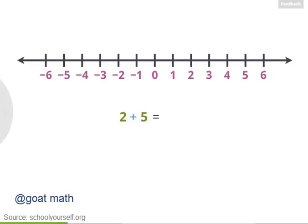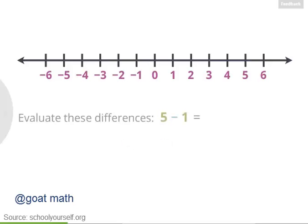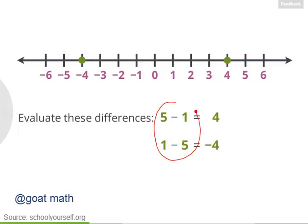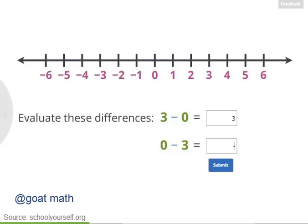When you're adding two numbers, you can switch the order and get the same answer. Does that work for subtraction? Try evaluating 5 minus 1 and then 1 minus 5. 5 minus 1 is 4, while 1 minus 5 is negative 4. When you switch the order of subtraction, you get positive and negative versions of the same number. What are 3 minus 0 and 0 minus 3? 3 minus 0 equals positive 3 — subtracting 0 always gives you the number back. And 0 minus 3 equals negative 3.